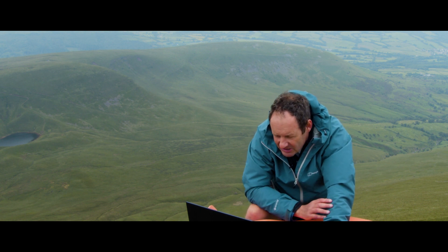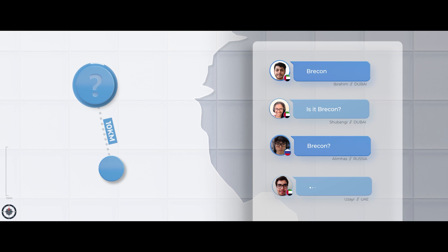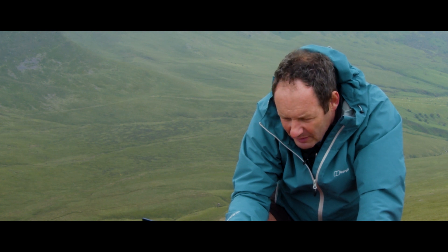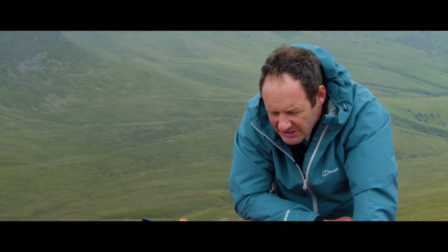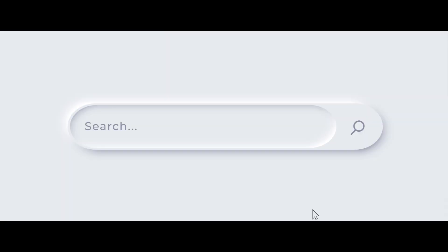Next question: there is a town roughly 10 kilometres north of me. Post a chat — what is the name of that town? Excellent, guys. You've identified that about 10 kilometres north of me we have a town called Brecon. I would like you to use either Google Maps or Google to work out the altitude of Brecon above sea level — height in metres above sea level.